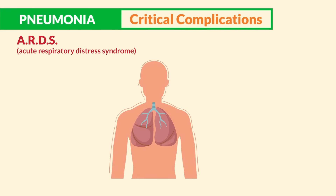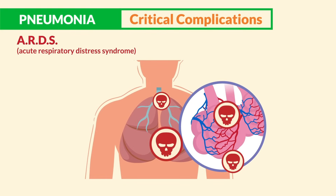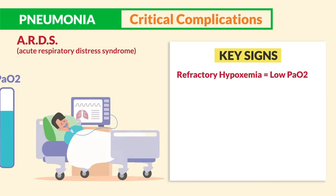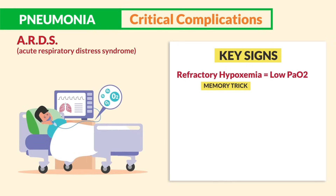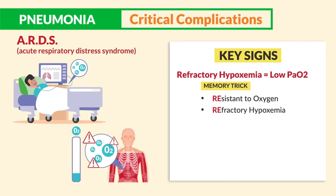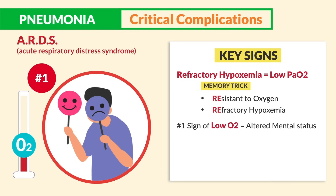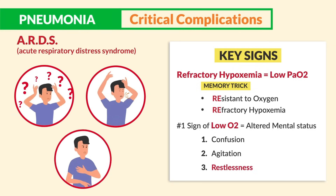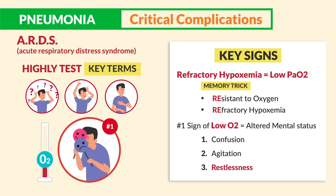The most deadly complication is ARDS — acute respiratory distress syndrome — deadly stiff lungs (think ARDS, hard lungs). Key signs: refractory hypoxemia — low PaO2 despite increased oxygen delivery — the body is resistant to oxygen. The first signs of low O2 are altered mental status: confusion, agitation, and restlessness. We cover ARDS in its own full video, but these are the priority, highly tested key terms.